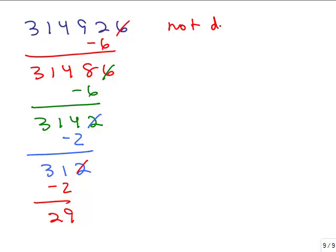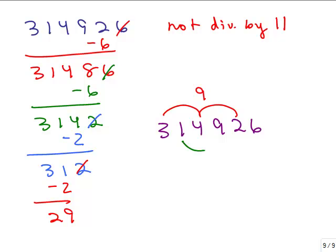So let's just do that one using the first method I showed you. 314926, you do every other digit, add those, so that's 9, and then at the bottom, we add every other digit, which is 16, and 16 minus 9 is 7. So, no, 11 does not go into 7, so also not divisible by 11.